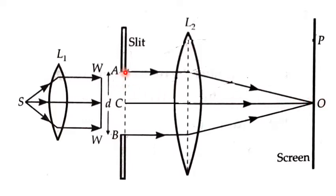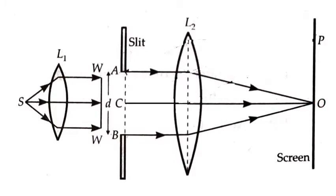Consider three points in the slit: point A, point C, and point B. The light coming from point A goes and strikes the surface at point O. The light passing from point C passes undeviated, whereas the light from point B also goes and strikes at point O.